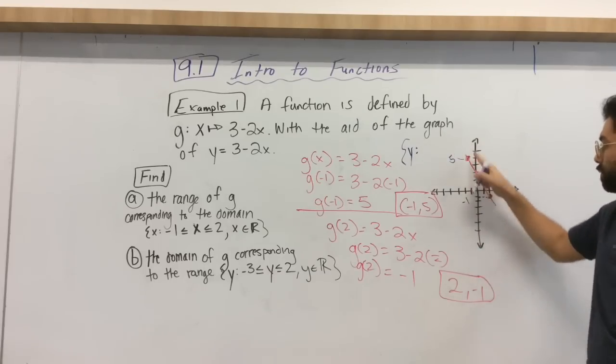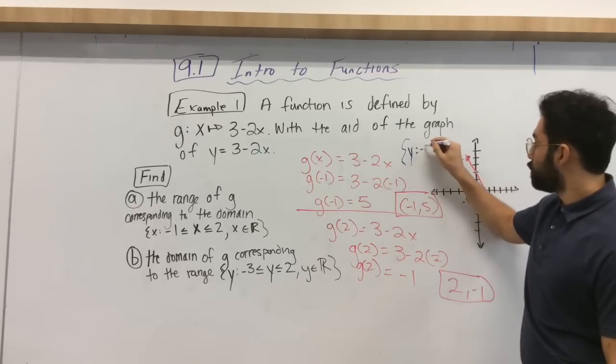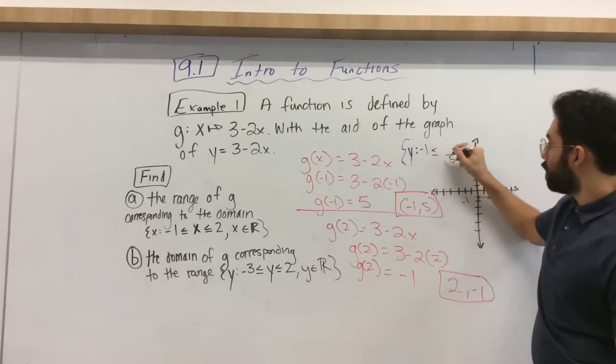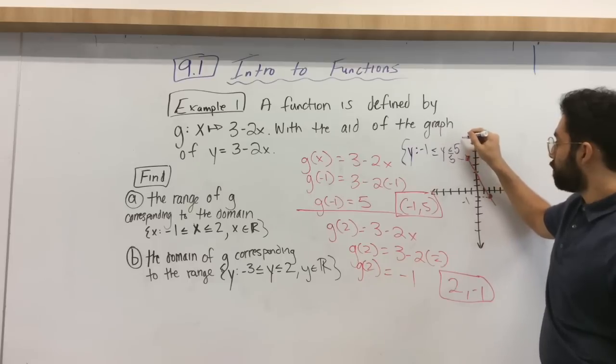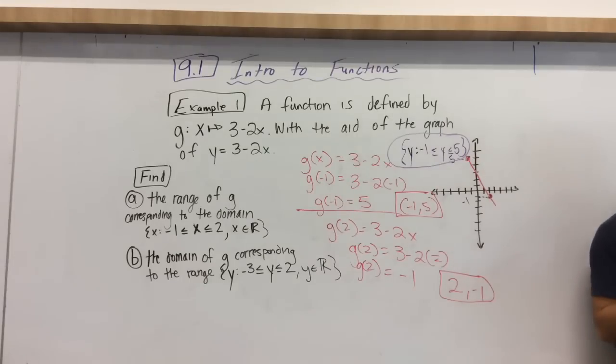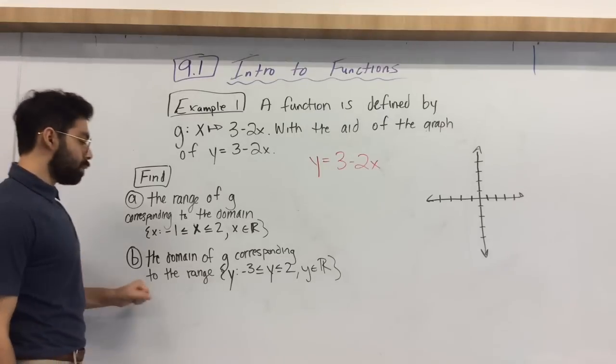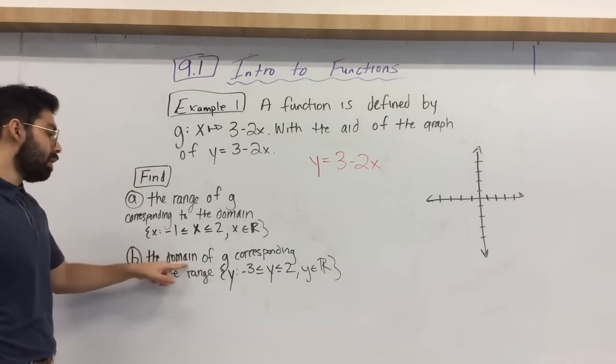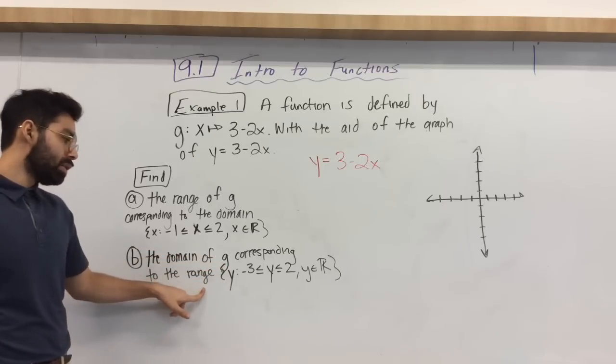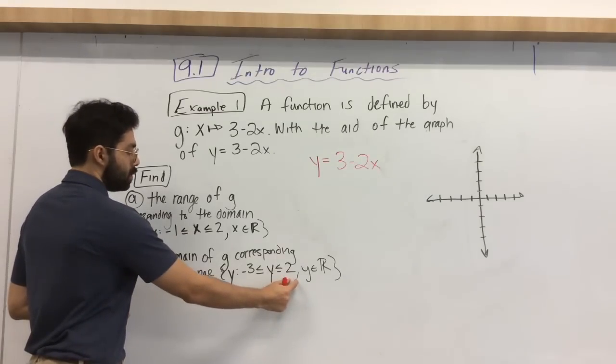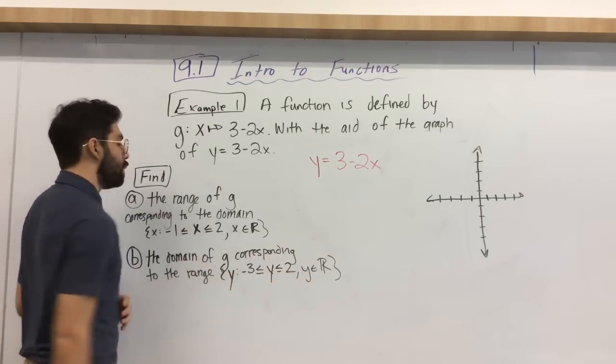So our range, from bottom to up, is between negative 1 and 5. So this is our range, given the fact that our domain is between negative 1 and 2. All right. So let's do the second part of this question. The second part tells us to find the domain of G that corresponds to the range. So we have the range. It is between negative 3 and 2. Okay? Where y is an element of all real numbers.